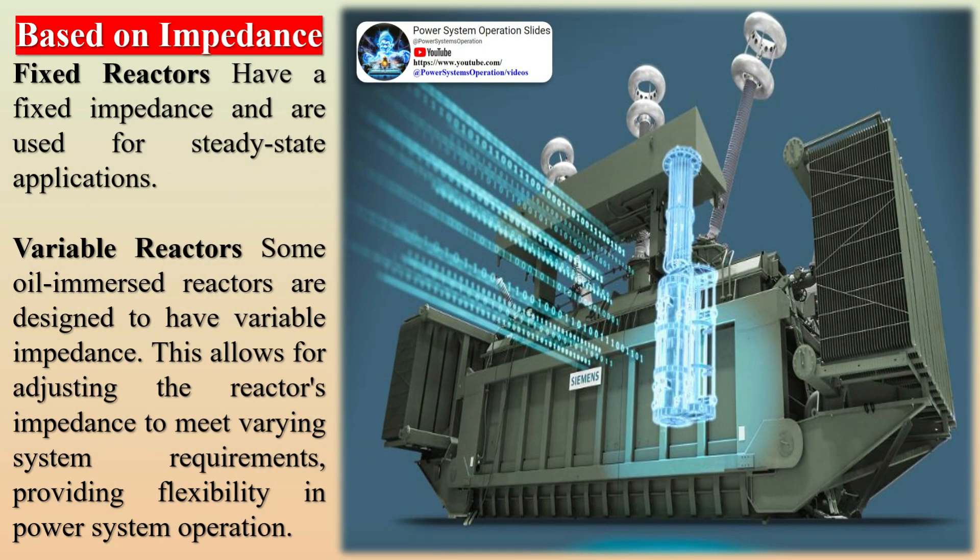The reactive component of the current creates a pulsating magnetic flux in the reactor's core. The power required to generate this magnetic flux is known as reactive power, measured in kilovolt-amperes reactive (kVAR). It is calculated as the product of current, system voltage, and the sine of the phase angle φ between voltage and current.